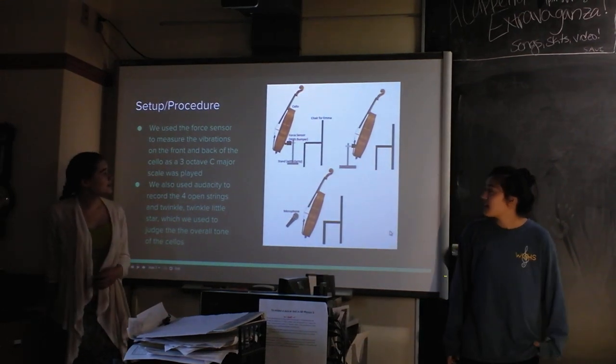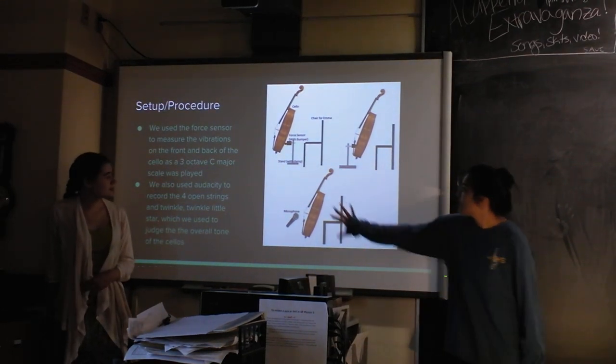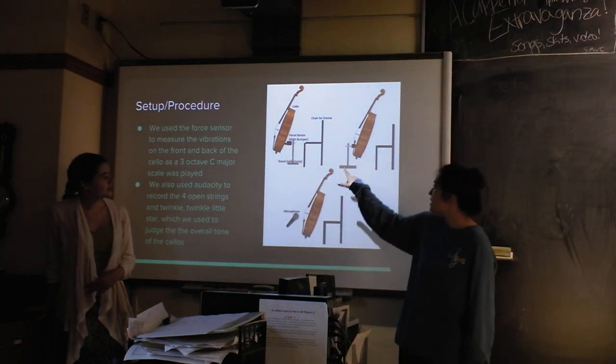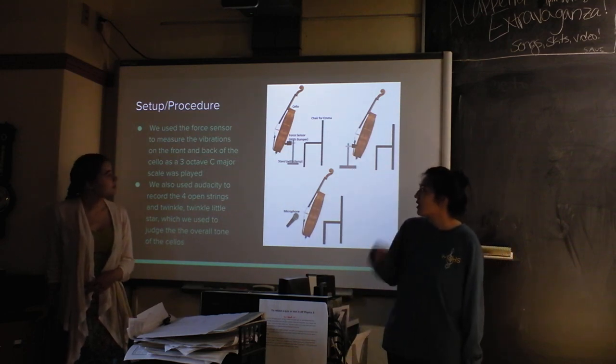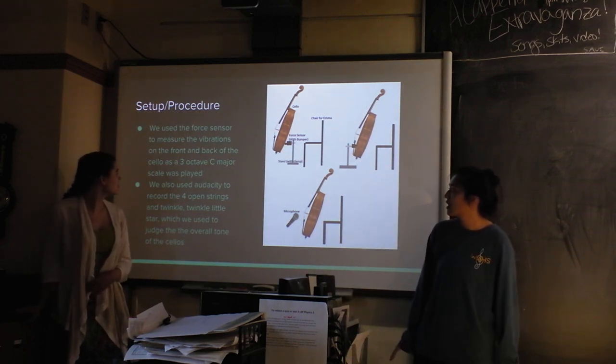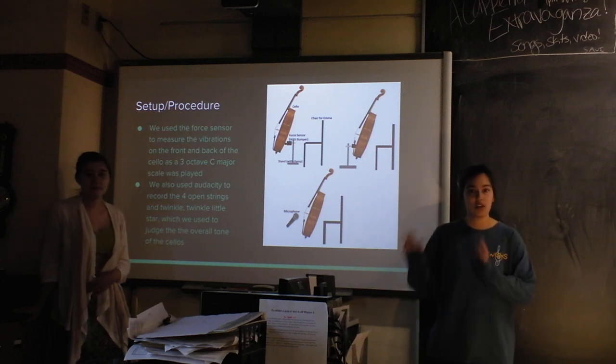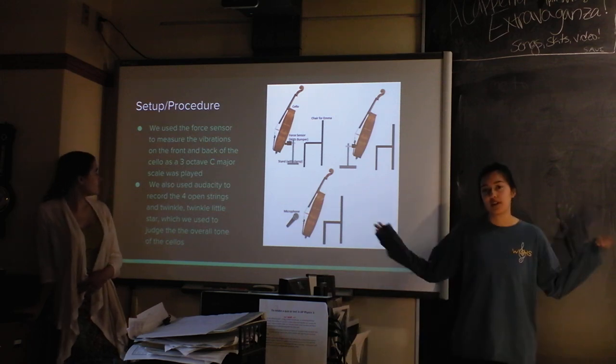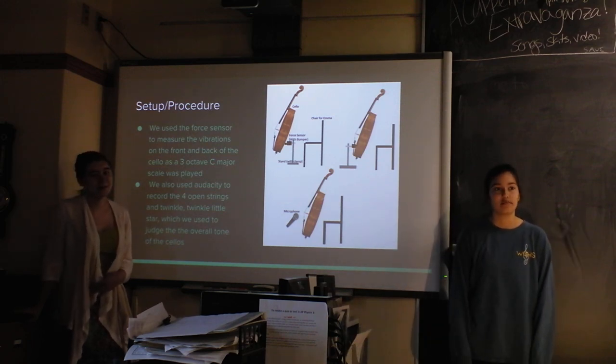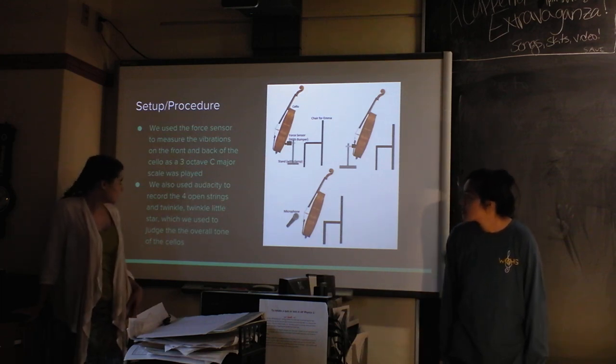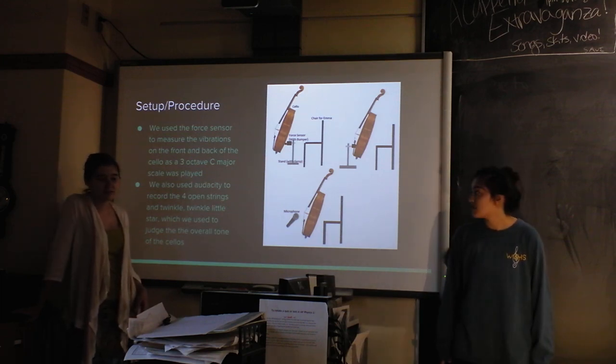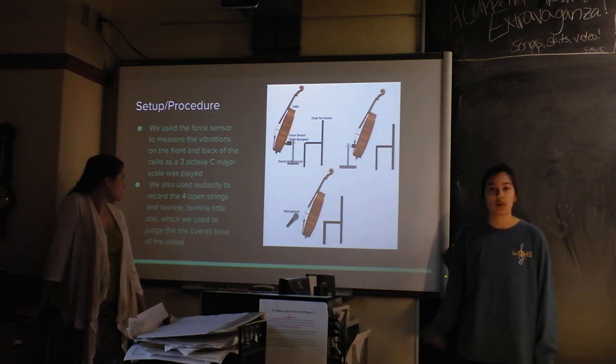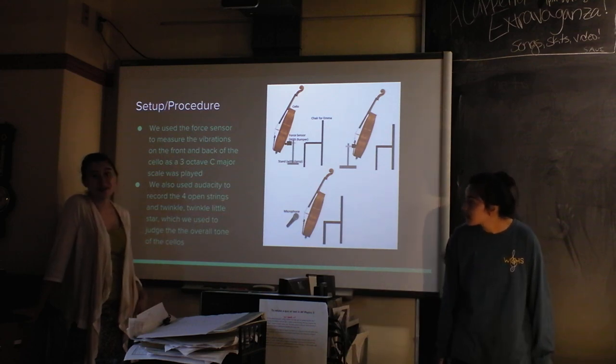We had Emma play her cello and we set up a force sensor here and then another time here to measure the vibrations on the front and back of the cello as Emma played a C major scale. We just picked C major because it's easy to do. We also used Audacity to record the four open strings of each cello and the first verse of Twinkle Twinkle Little Star.